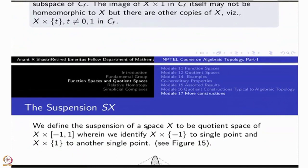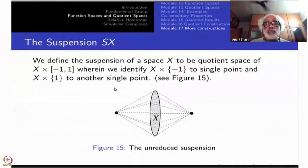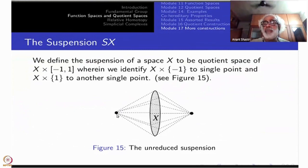This time we will take two copies. Instead of X cross I, you take X cross [−1, +1]. You identify both end slices — X cross {−1} as well as X cross {1} — to two different single points. So this is the picture: we have X cross [−1, +1] like a cylinder. X cross {1} goes to a single point at one end, X cross {−1} comes to a single point at the other end. This is called the suspension of X.